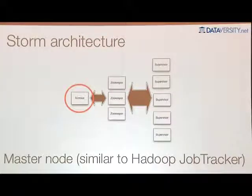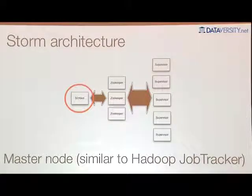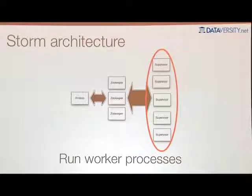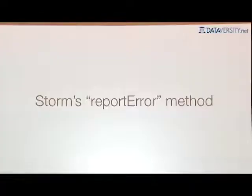There are three classes of nodes in a Storm cluster. On the left we have Nimbus, which is the master node, and it plays a role similar to the Hadoop job tracker. Nimbus is where you submit topologies for execution, and it takes care of launching workers around the cluster. In the middle there's a ZooKeeper cluster, which Storm uses for cluster coordination. On the right, we have worker nodes — each runs a daemon called the supervisor, which communicates with Nimbus through ZooKeeper to determine what should be running on that machine, starting and stopping workers as dictated by Nimbus.